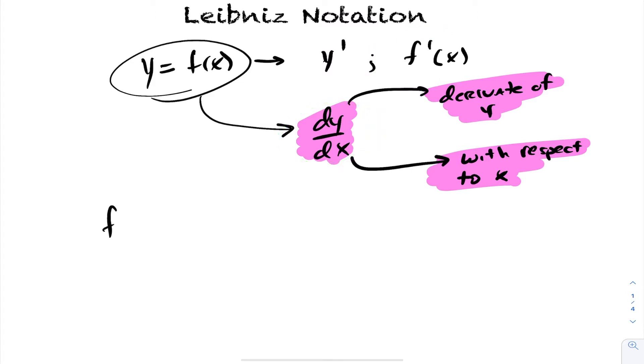Now suppose you want to express the derivative at a specific point. f prime at 2 would be the value of the derivative at 2. An equivalent definition using our new notation would be dy/dx evaluated when x is 2. Both mean the exact same thing.